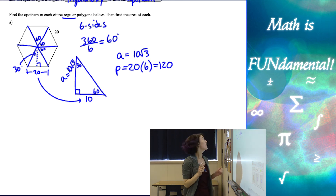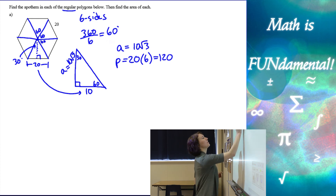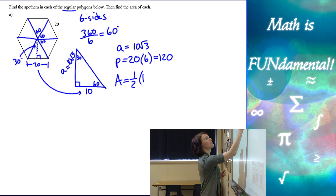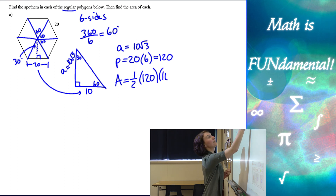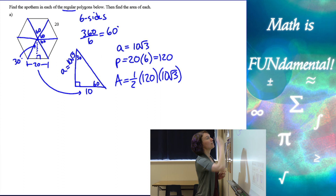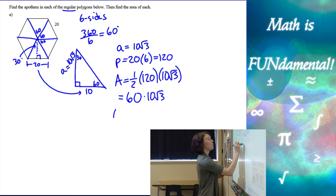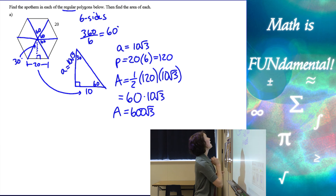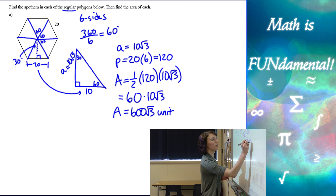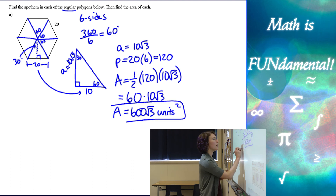Now I know that my apothem is 10 times the square root of three, and the perimeter of my shape is the side length 20 times the number of sides 6, which is 120. I can find my area, which is one half times the perimeter times the apothem. Simplifying: one half of 120 is 60, times 10 root three, which gives me 600 times the square root of three. It didn't give me any units in this problem, but I always want to include them, so I'll put units squared.